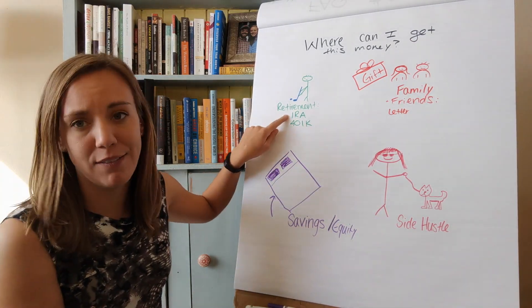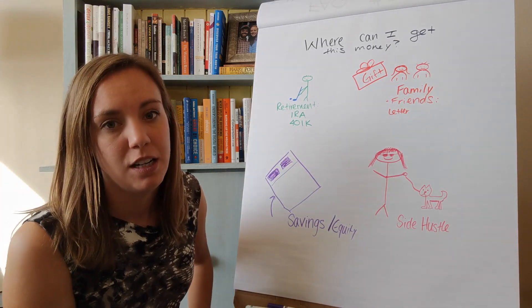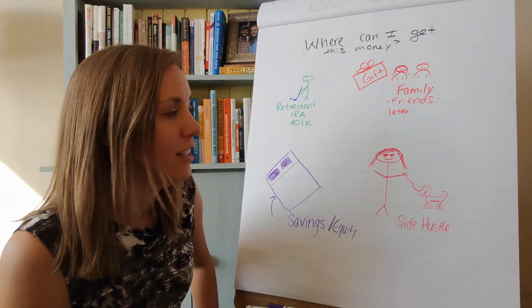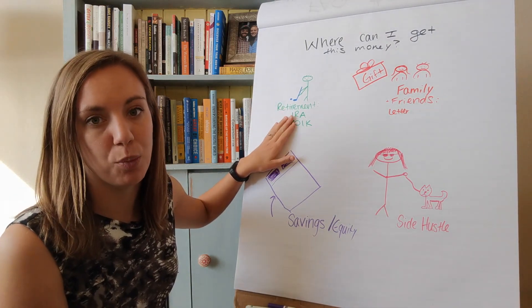Now if you have an IRA, that's even better because you can pull money out without penalty. You do have to pay the taxes unless it's a Roth IRA, but you can take that money out for your primary residence, no problem.